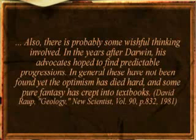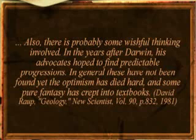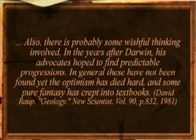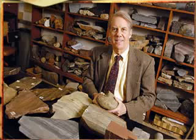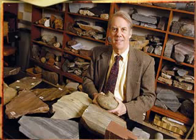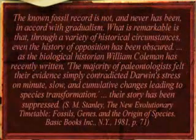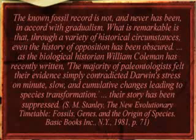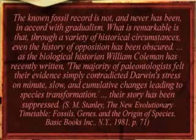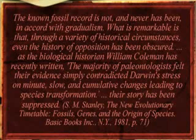In the years after Darwin, his advocates hoped to find predictable progressions. In general, these have not been found, yet the optimism has died hard, and some pure fantasy has crept into textbooks. The American paleontologist Stephen Stanley describes how this aspect of the fossil record is ignored by the Darwinist dogma that dominates the scientific world, and how that dogma persuades others to ignore the facts too: 'The known fossil record is not, and has never been, in accord with gradualism. What is remarkable is that, through a variety of historical circumstances, even the history of opposition has been obscured. The majority of paleontologists felt their evidence simply contradicted Darwin's stress on minute, slow, and cumulative changes leading to species transformation. Their story has been suppressed.'